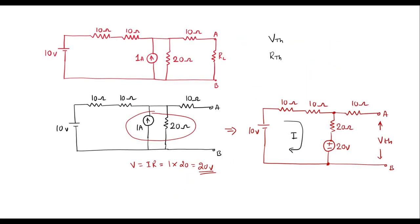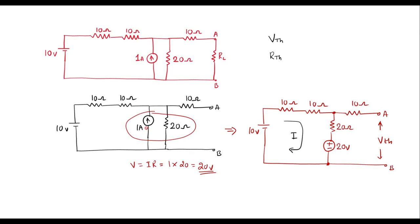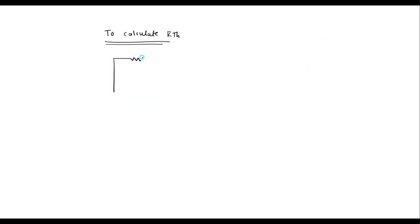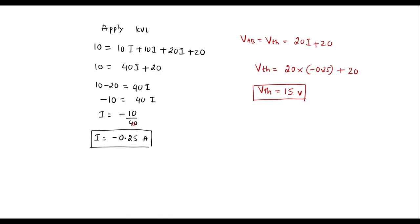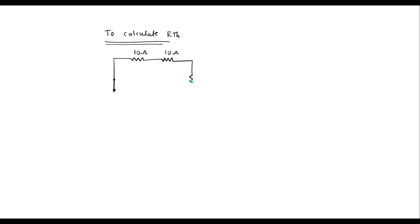Now, to calculate RTH — Thevenin's resistance — we need to open-circuit the current sources and short-circuit the voltage sources. I will draw the same circuit, but open the 1 amp current source and short the 10 volt source. The 10 volt source will be short-circuited. Here we have 10 ohm, 10 ohm, 10 ohm, and 10 ohm resistors. The voltage source is shorted, the 1 amp current source is open-circuited, leaving only the 20 ohm resistor across that branch. Here we have the 20 ohm resistor, and this 10 ohm resistor will appear as it is. This is terminal AB.